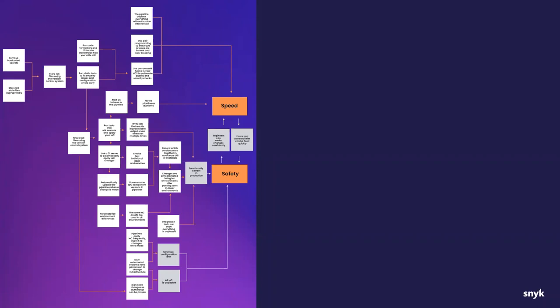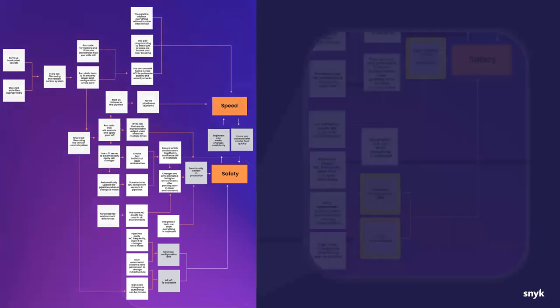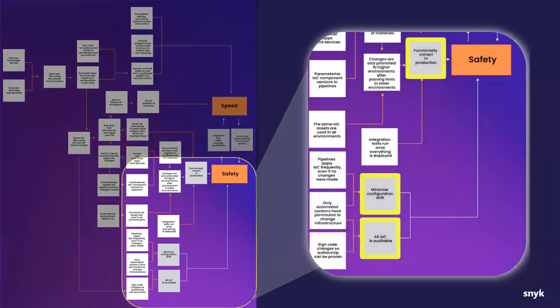The last time we did this, we focused on the early stages of adoption. Today, what we're going to focus on is the later stages of production, under this category of safety — some key functionalities and outcomes that are desirable: maintaining or minimizing drift after you've started to deploy things with IaC, making sure things are functionally correct when they're in production, and making sure things are auditable as well.